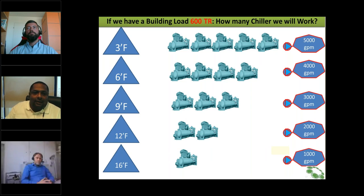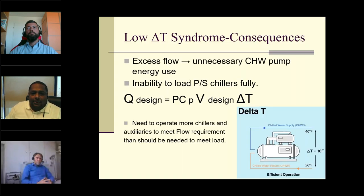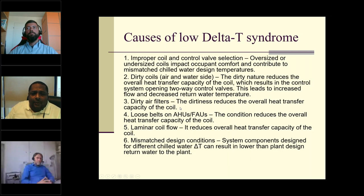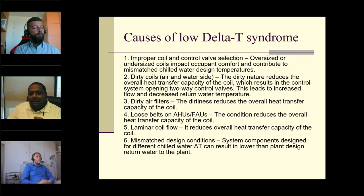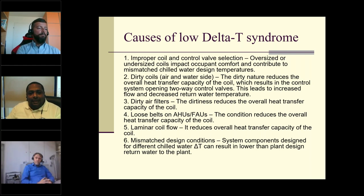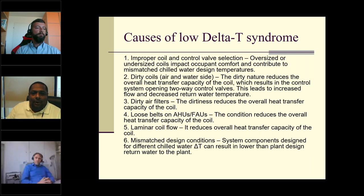The chiller flow equation is Q_design = ρ·c_p · ΔT. What causes this low delta T? Partially it can be the secondary network, but the major problems happen in the building itself. I have identified around 40 reasons for low delta T, and we will tackle several today. These include improper control valve selection, dirty coils, dirty air filters, loose belts, and mismatched design conditions.